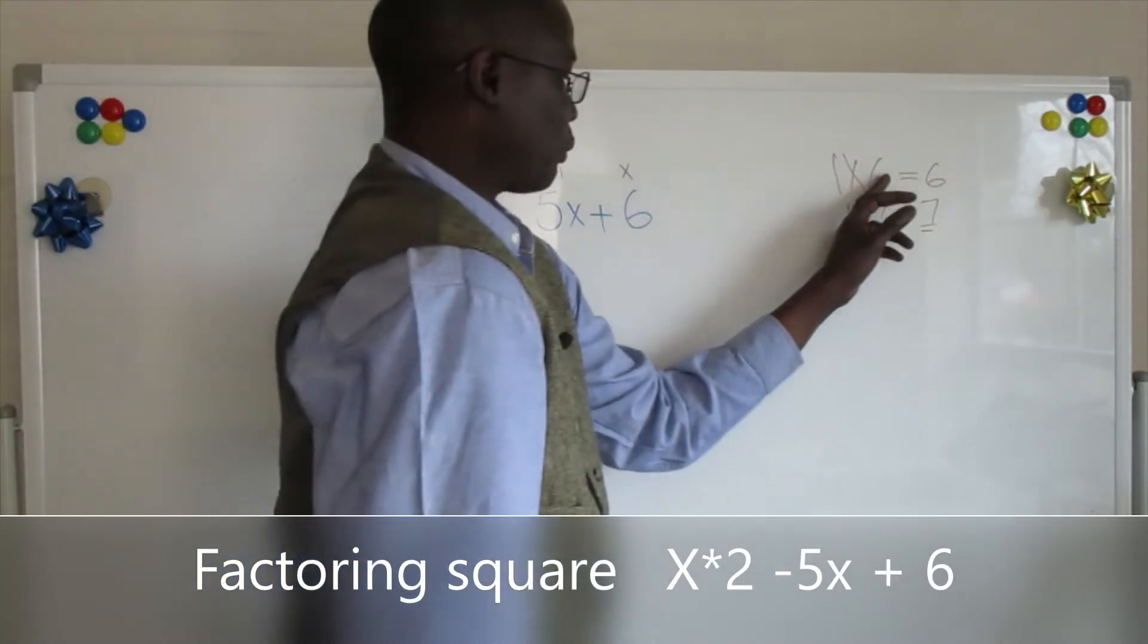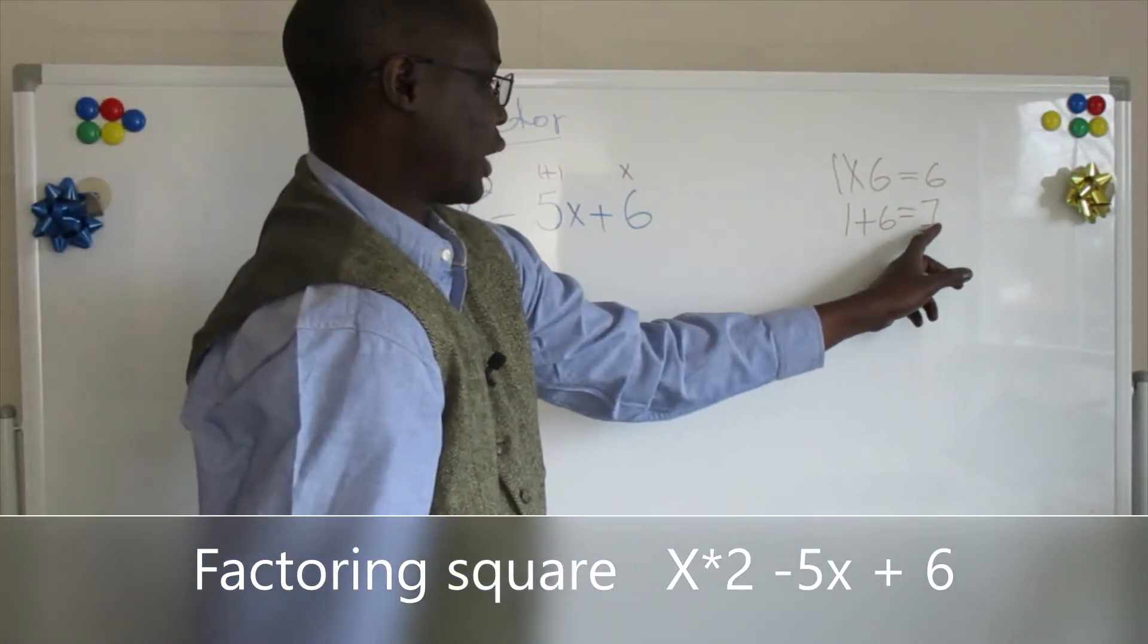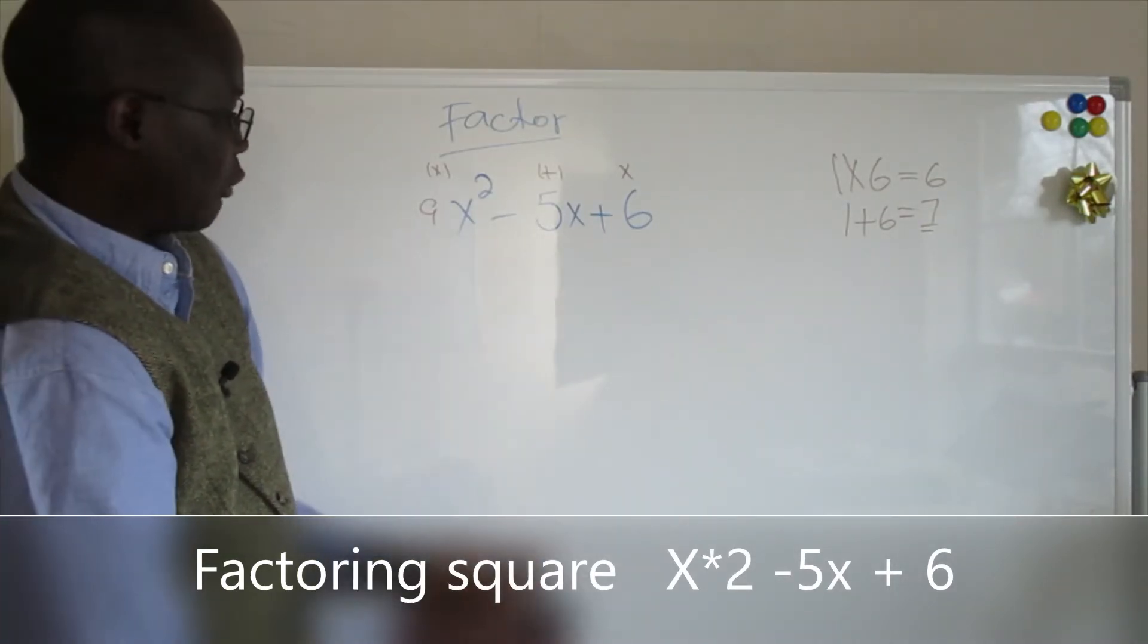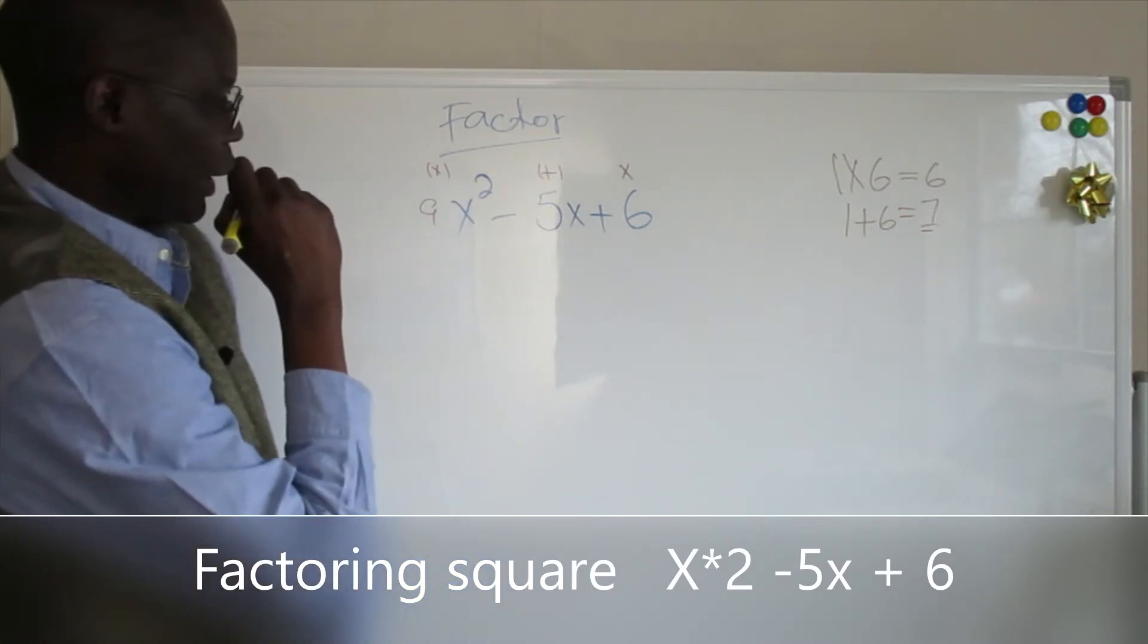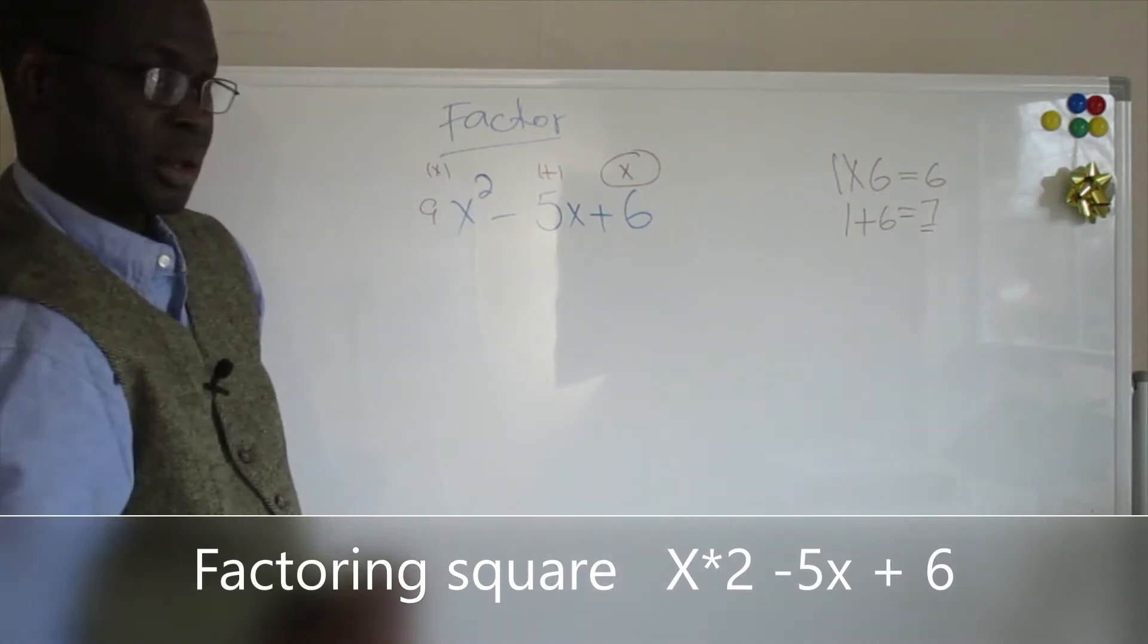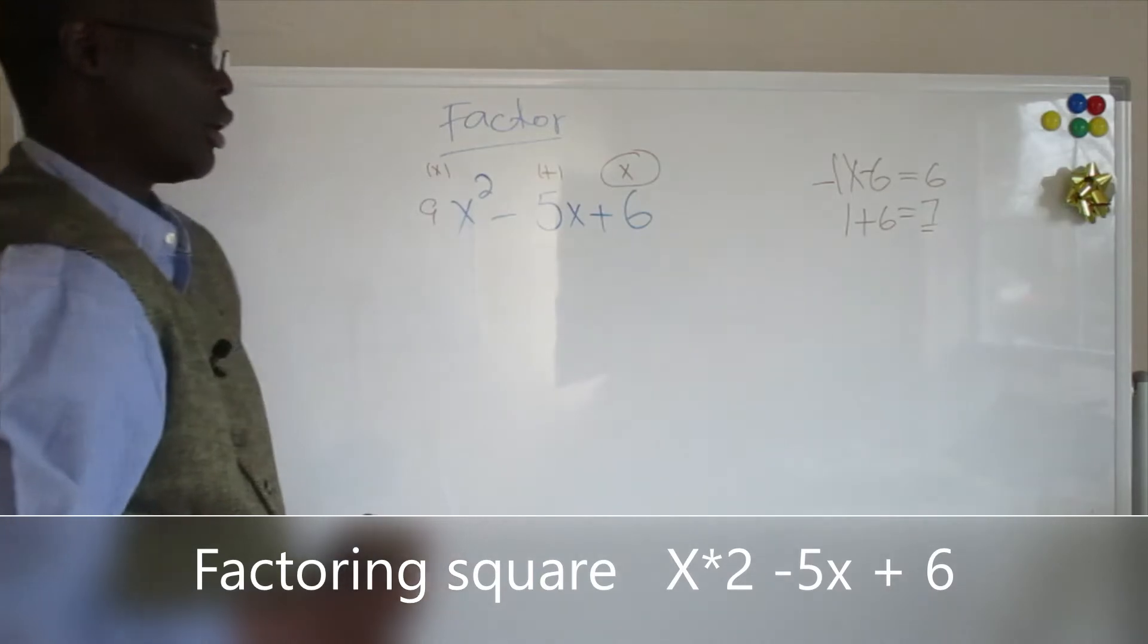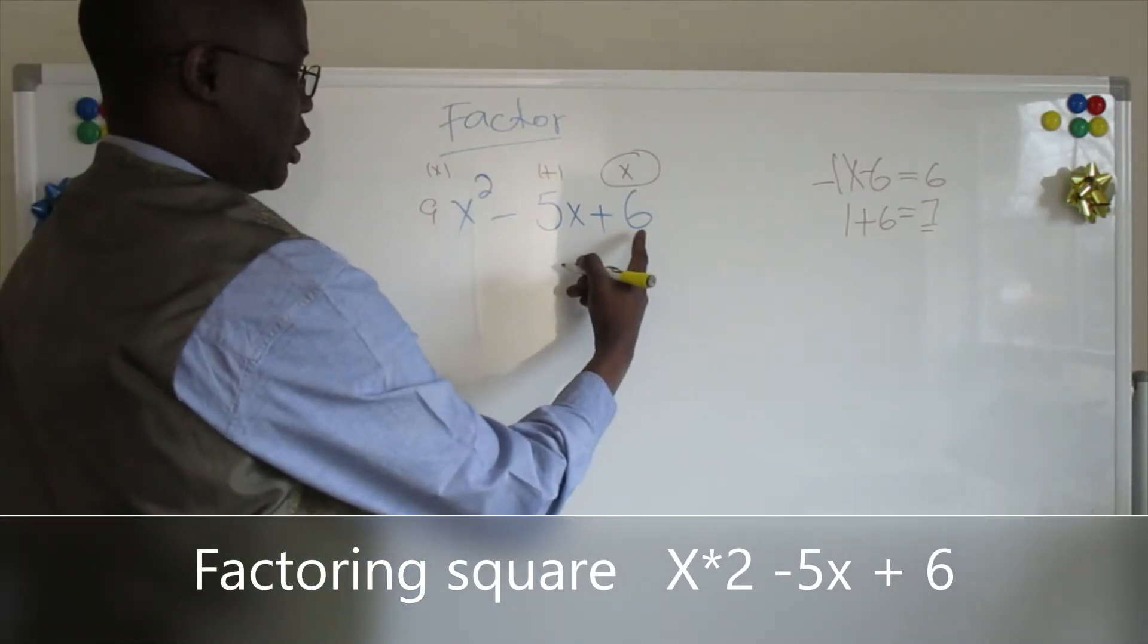So 1 times 6 is not the right number. Why? Because 1 plus 6 equals 7 and what we have here is minus 5. Another thing also you want to learn on this one: because we say it is times, those two numbers have to be a minus to get 6.